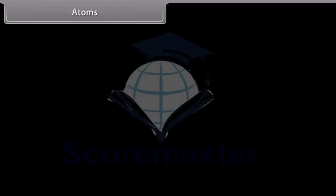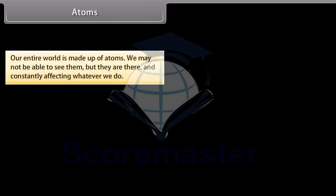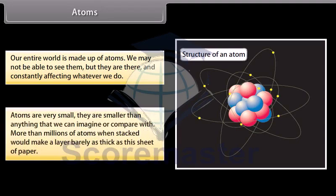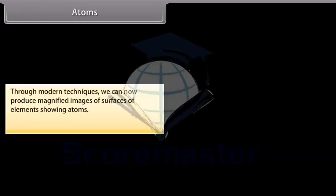Atoms. Our entire world is made up of atoms. We may not be able to see them, but they are there and constantly affecting whatever we do. Atoms are very small. They are smaller than anything that we can imagine or compare with. More than millions of atoms when stacked would make a layer barely as thick as this sheet of paper.